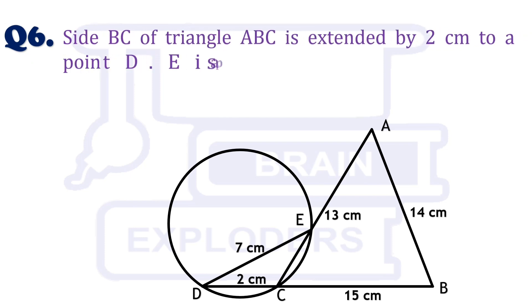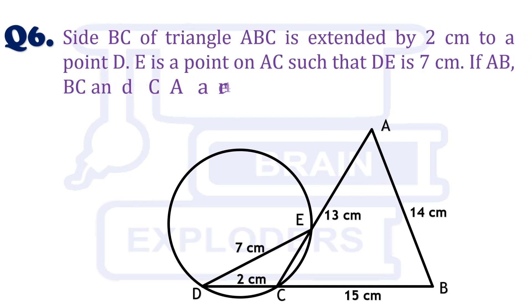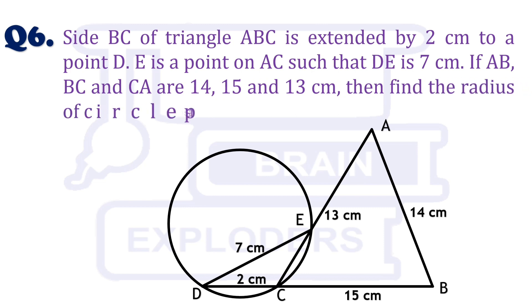Side BC of triangle ABC is extended by 2 cm to a point D. E is a point on AC such that DE is 7 cm. If AB, BC and CA are 14, 15 and 13 cm, then find the radius of circle passing through D, C and E.